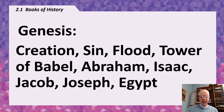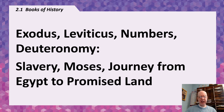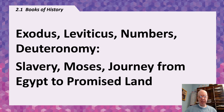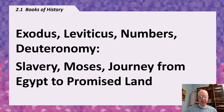Then we go to Exodus, Leviticus, Numbers, and Deuteronomy. After a while, the people were in Egypt doing well, but a new pharaoh came along and said these people were going to be a problem, so he made them slaves. He didn't remember what Joseph had done. Finally, God raised up a man named Moses who was able to free the people from slavery and lead them on a journey back to the land promised to Abraham many years before.